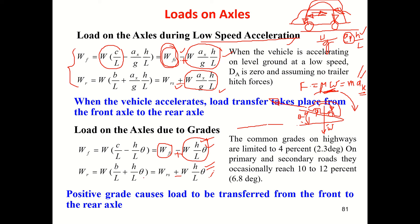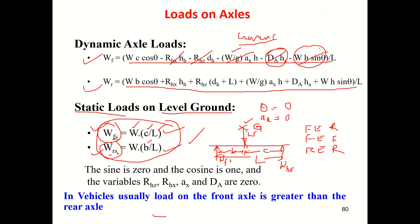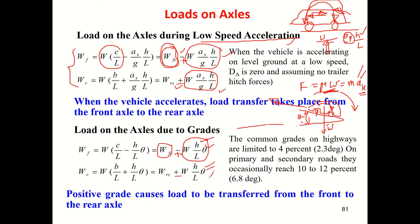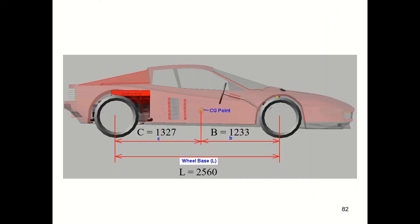From this equation we can find the height of the center of gravity, and along the x-axis we can find c and b positions — that is how we locate the CG using these equations. Now I have done a simple simulation using Adams.